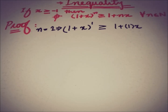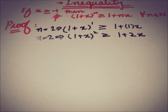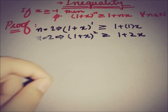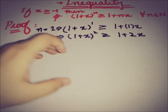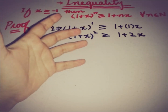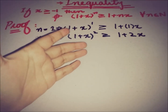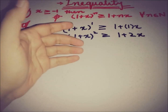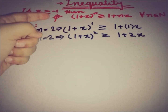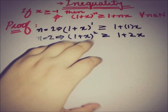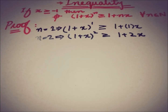If we take n equal to 2, the inequality is: 1 plus x whole square is greater than or equal to 1 plus 2x. This is true because expanding 1 plus x whole square gives 1 plus x squared plus 2x, which has the additional term x squared. Since x is greater than or equal to minus 1, this is indeed greater than or equal to 1 plus 2x. So the inequality is verified for n equal to 1, 2, and beyond.